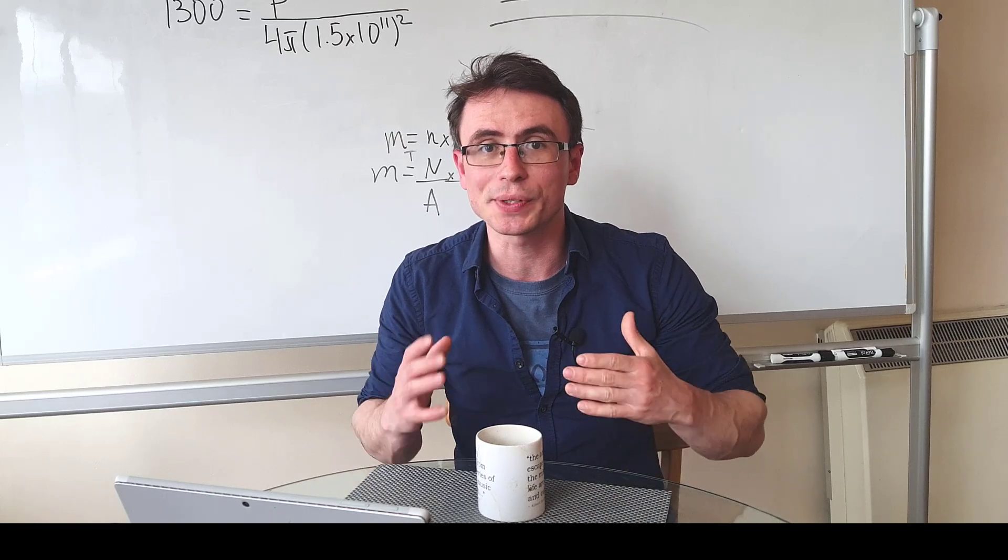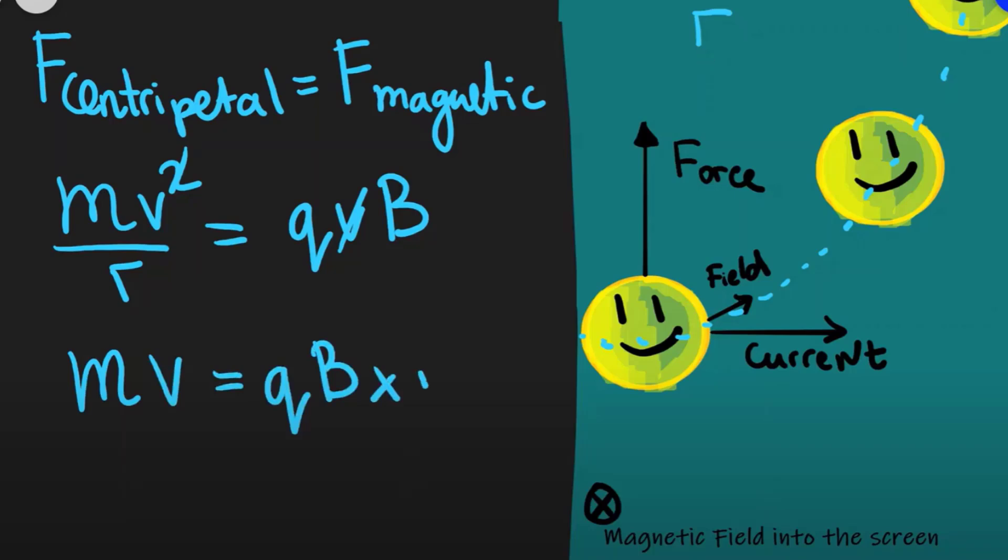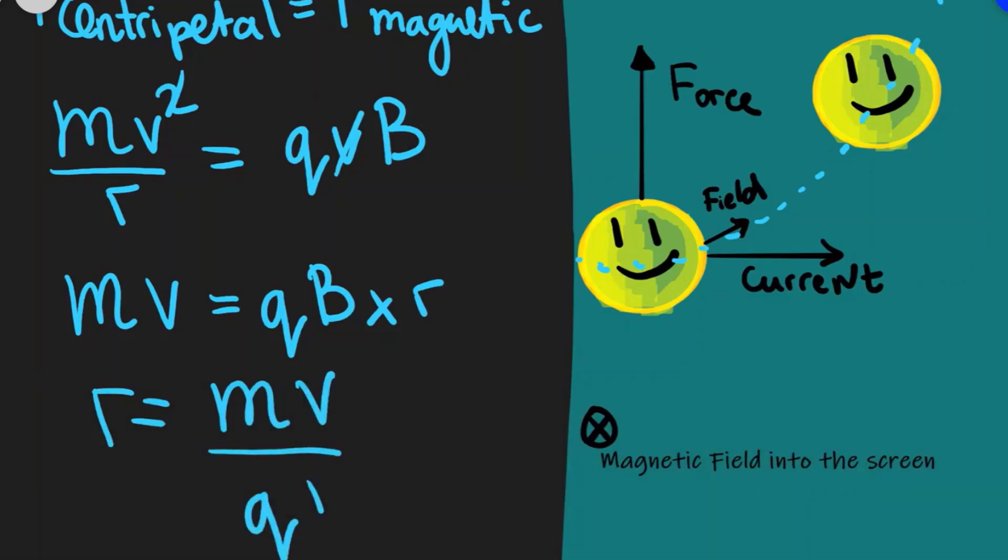Anytime in an exam that you see a charged particle moving in a magnetic field, we can always set the magnetic force equal to the net centripetal force, and then we can use this equation to estimate the mass of a particle or the radius.